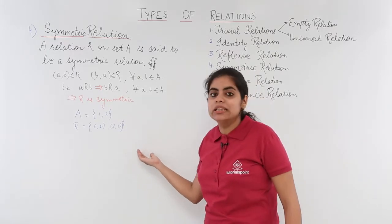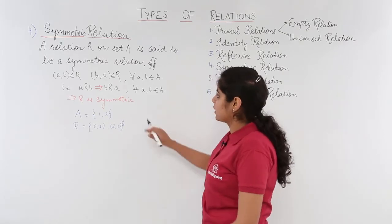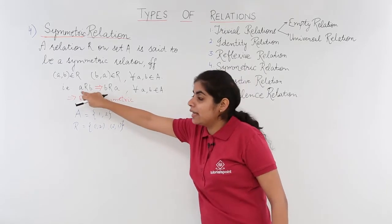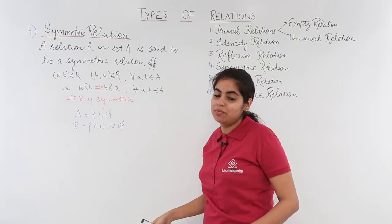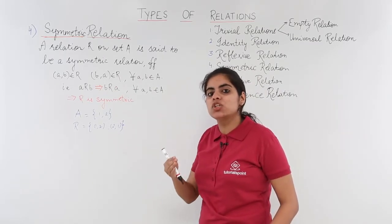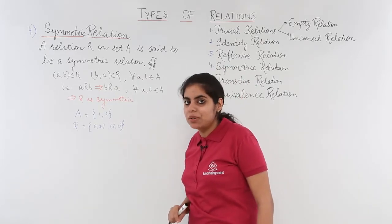Now let's see whether this relation R is symmetric or not. R is symmetric when A is related to B and also B should be related to A. That means if (A, B) is present then (B, A) should also be present for a relation to be a symmetric relation.